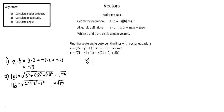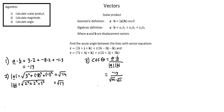Step 3: calculate angle. Looking at the geometric definition of the scalar product, the scalar product equals the product of the two magnitudes times cosine of the angle. Our manipulation gives cosine of theta equals the scalar product divided by the product of the two magnitudes. In the numerator we have negative 13; in the denominator, the square root of 74 times the square root of 17. Using the inverse cosine function, theta equals 68.5 degrees.